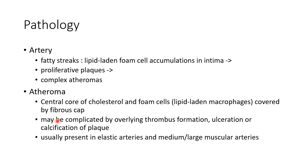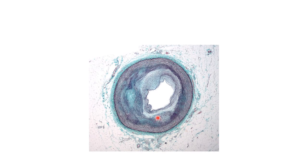Atheromas may be complicated by overlaying thrombus formation, ulceration, or calcification of plaque. Atheromas are usually present in elastic arteries and medium or large muscular arteries. This picture shows histopathology of atherosclerosis.